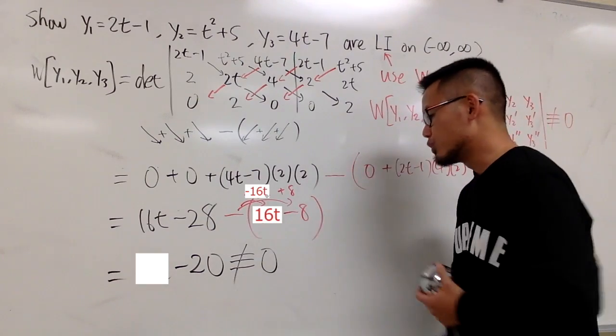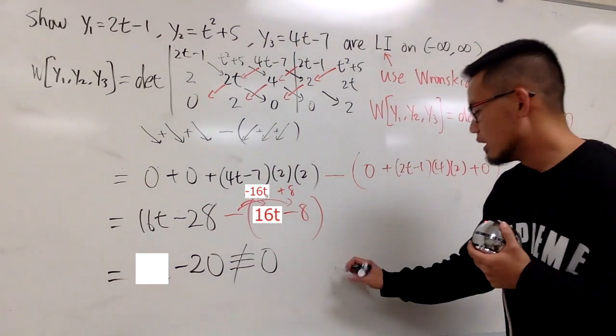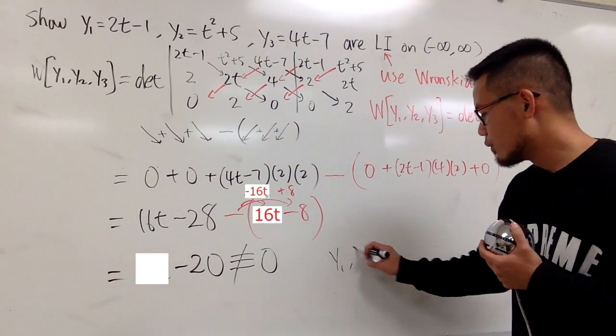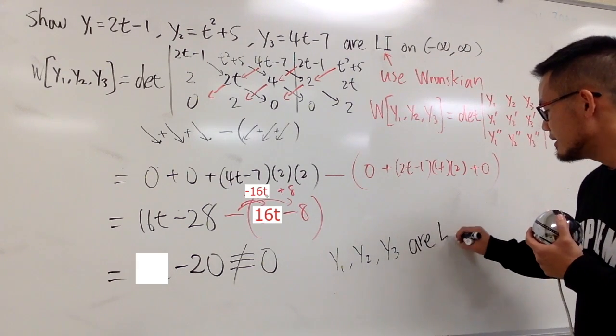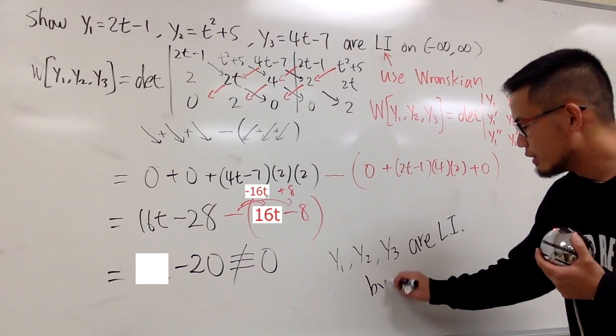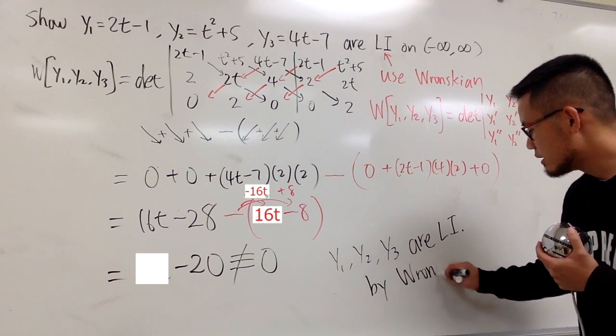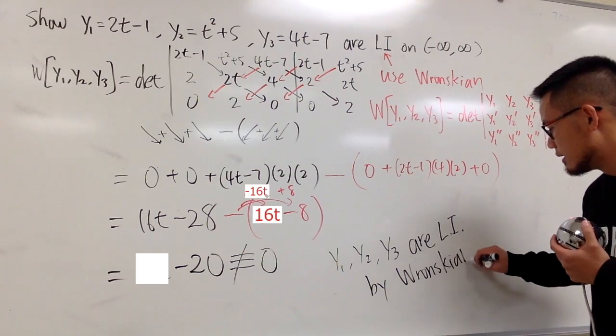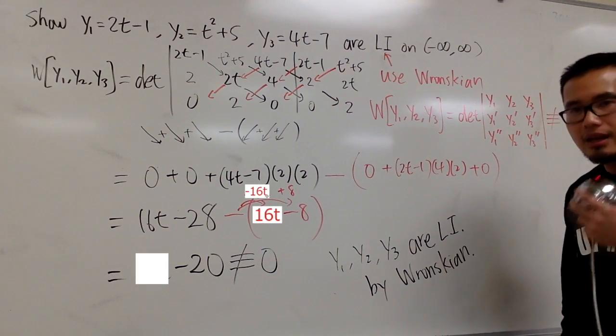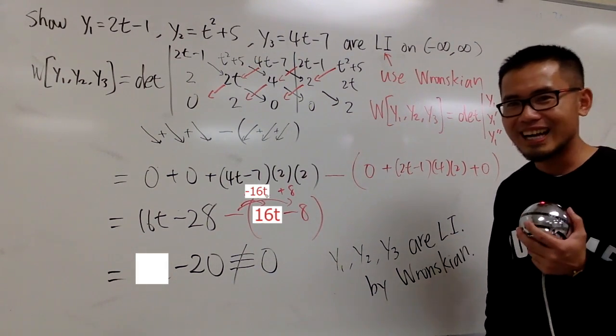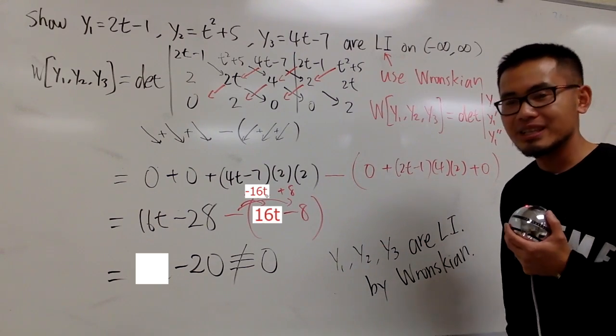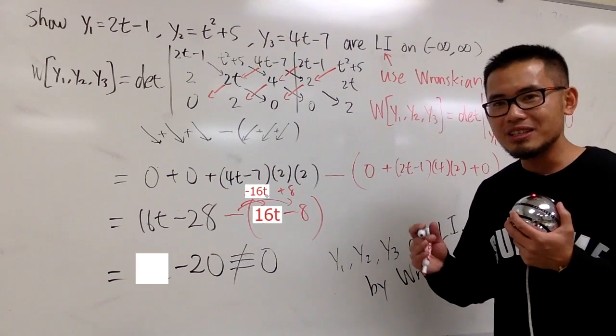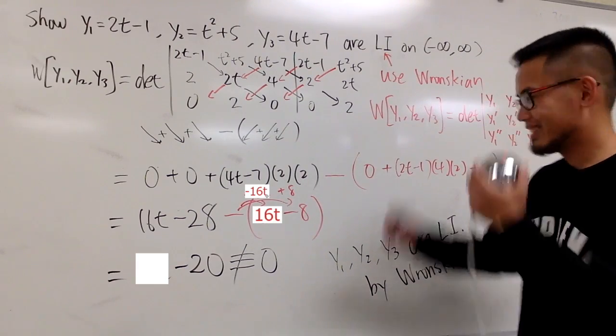Therefore, this is the work that you do. At the end, you can say that y1, y2, y3 are linearly independent by using the Wronskian. One last time: to show functions are LI, you can use the Wronskian. But to show functions are LD, use the definition. That's it.